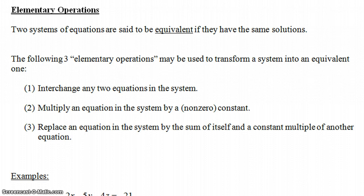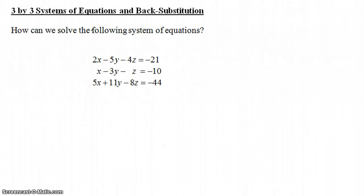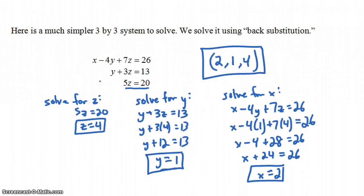Two systems of equations are said to be equivalent if they have the same solutions. Now if you remember from the previous video, I asked how would you solve a system of equations like this? It's really a multi-step process — it's definitely a process that takes a little bit of work and time. It's much easier if you have a system where you're missing the x term in your second equation and the x and y in your third equation. You can just use back substitution.